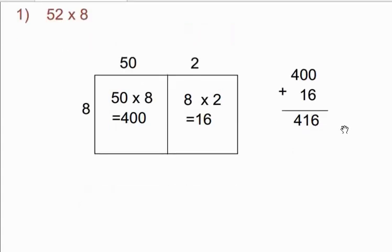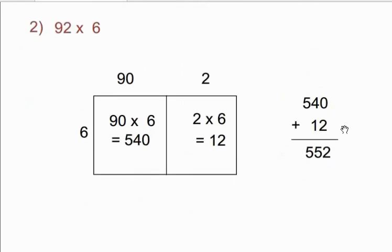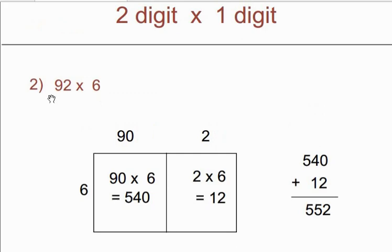Let us see another example. Here: 92 multiply by 6. 92 is our 2-digit number and 6 is our 1-digit number. So for 92 we write 90 plus 2 and 6 as it is, because it is our single number. Here also we need 2 boxes wide and 1 box high. Now take 90 from here and 6 from here and make a multiplication — 90 multiply by 6, so you will get 540.